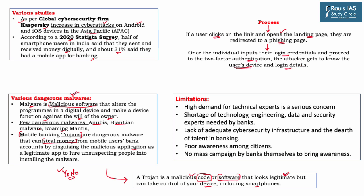India is becoming one of the largest victims of mobile banking hacks for several reasons. There is high demand but very few technical experts available. There is a shortage of technology, engineering, data and security experts needed by the banking sector — which mostly focuses on finance and economics professionals rather than technology. There is a lack of adequate cyber security infrastructure, with focus mostly on data privacy cyber attacks rather than financial security. Citizens are not aware of mobile banking threats and no mass campaigns have been conducted by banks to educate their customer base.